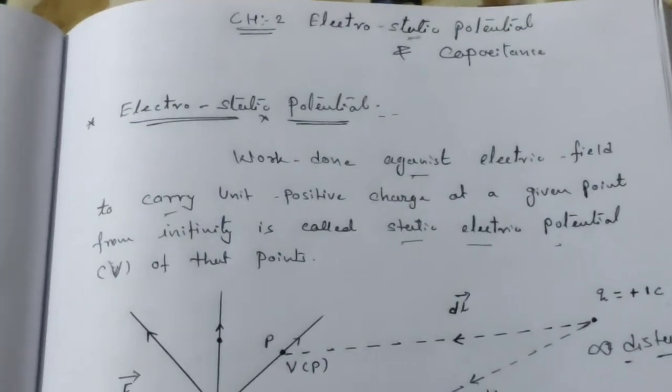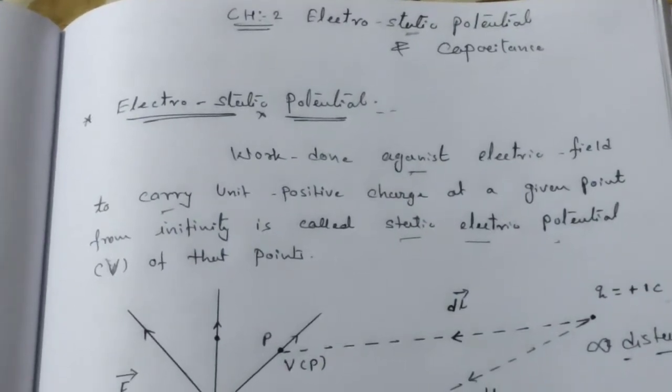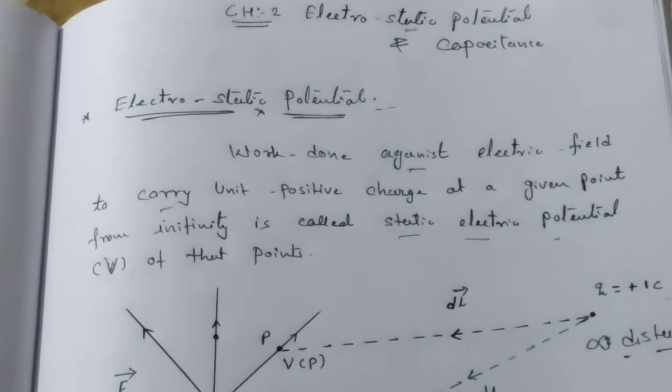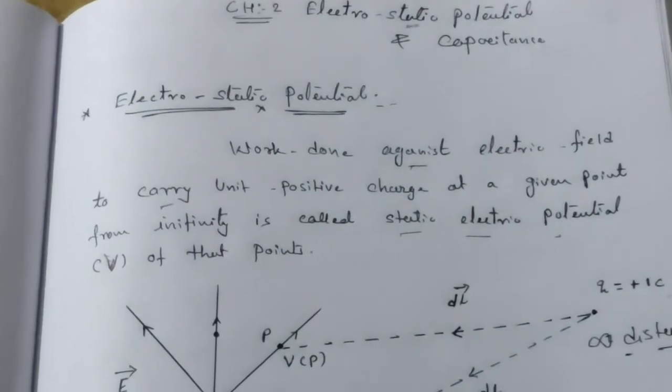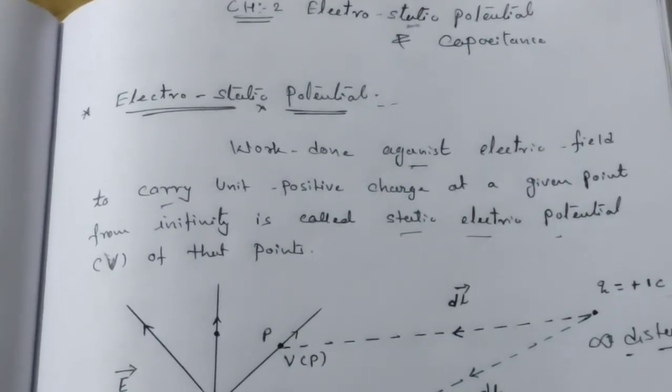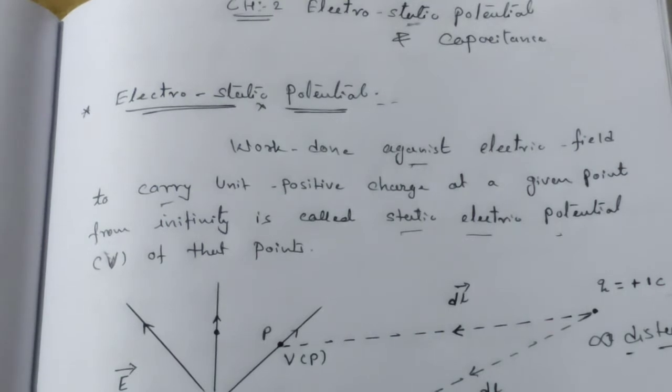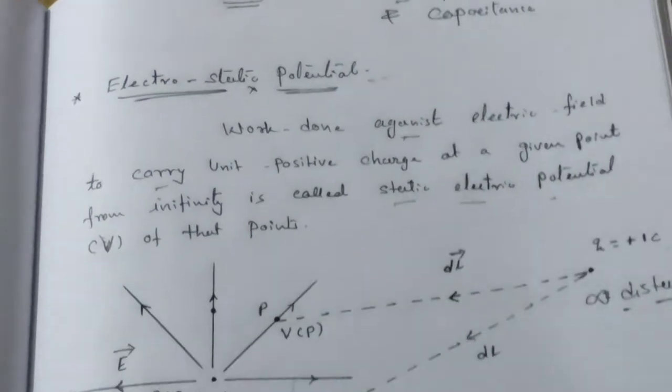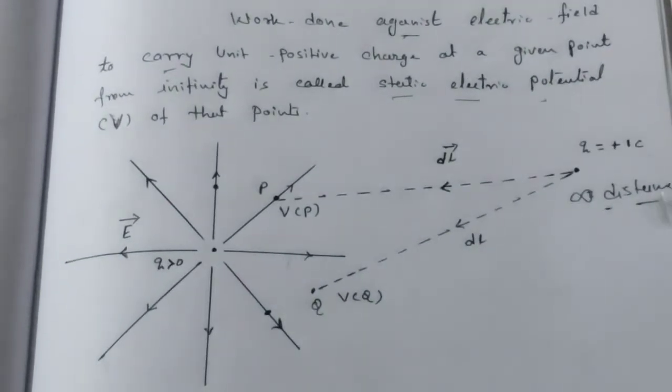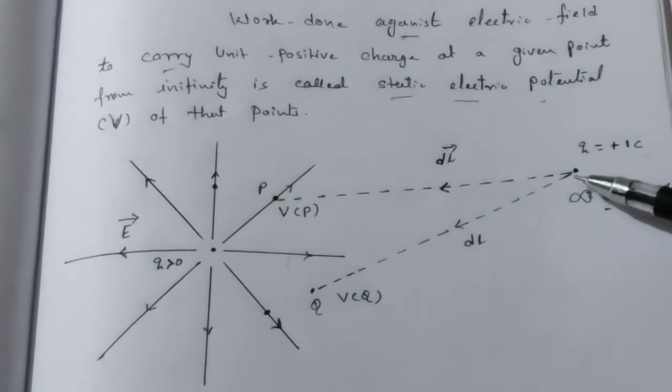In last lecture we saw electrostatic potential as an introduction. We showed that work done against electric field to carry unit positive charge at a given point from infinity is called static electric potential, with symbol V.